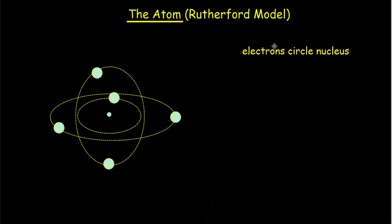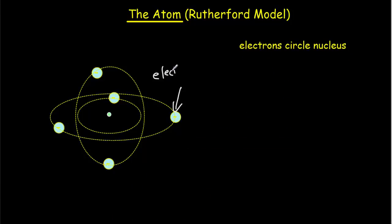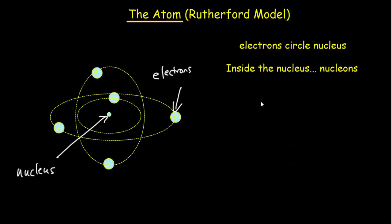The first feature is that there are electrons that circle the nucleus. These bluish circles here represent electrons, and they're negatively charged. The thing in the center is the nucleus. Inside the nucleus we have what are called nucleons, and there are two types of nucleons: protons and neutrons.